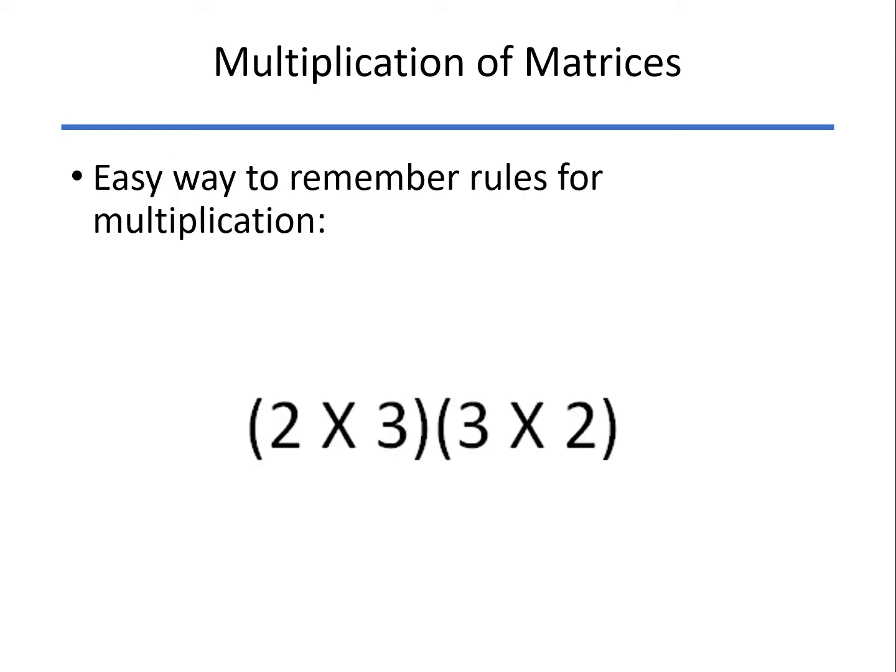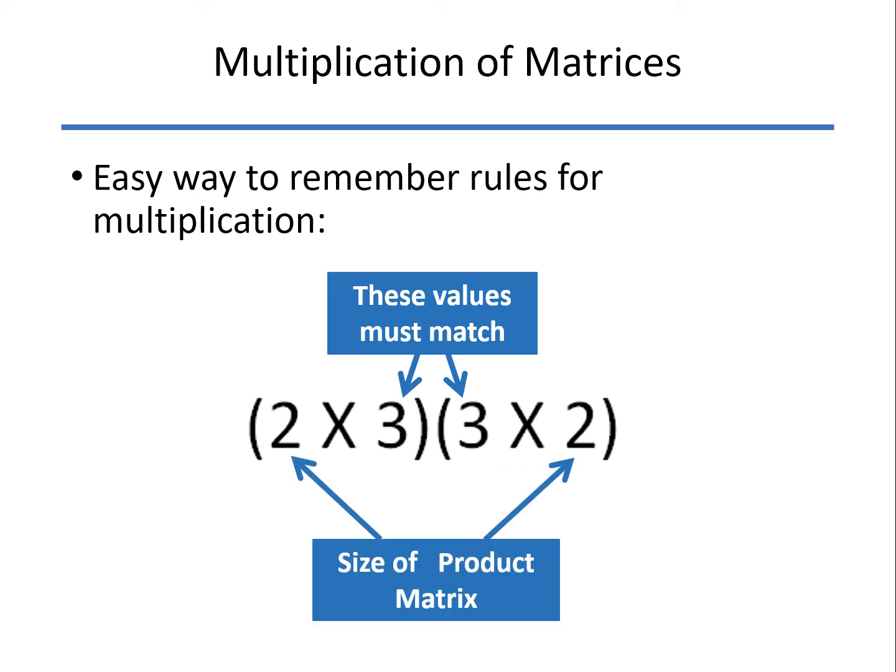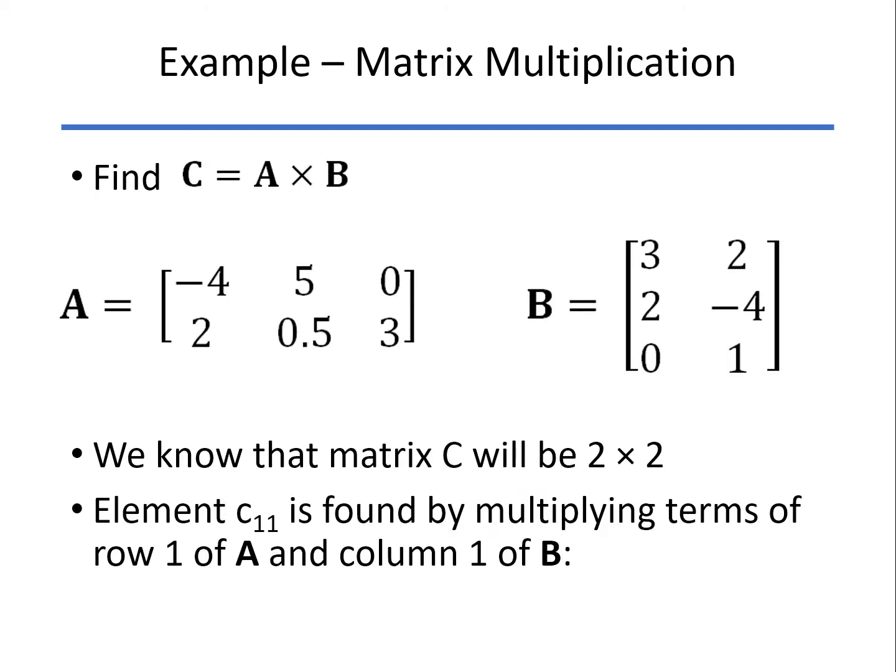The easiest way to remember that is just to write the sizes, 2 by 3 times 3 by 2. If those two inner values match, then you can do the multiplication. And the product will be the outer values here, in this case a 2 by 2.